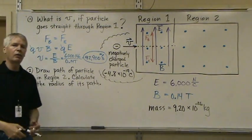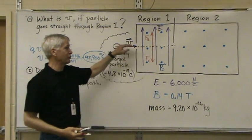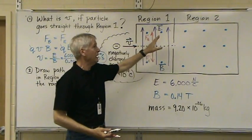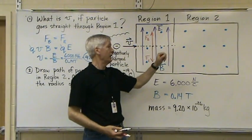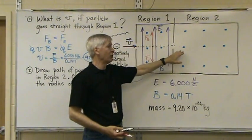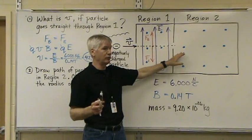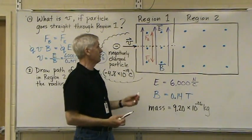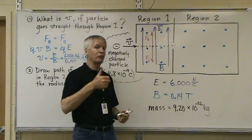Alright, now, when this particle passes straight on through, goes through this opening, it will go into Region 2. And in Region 2, there's only a magnetic field, no electric field. Therefore, it will still have an upward magnetic force acting on it.